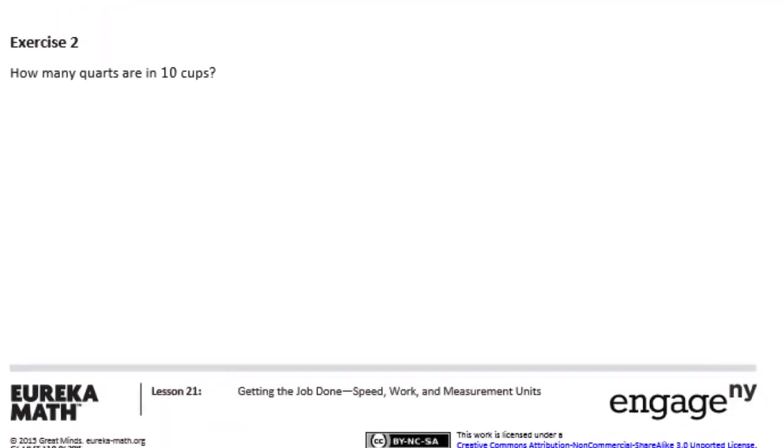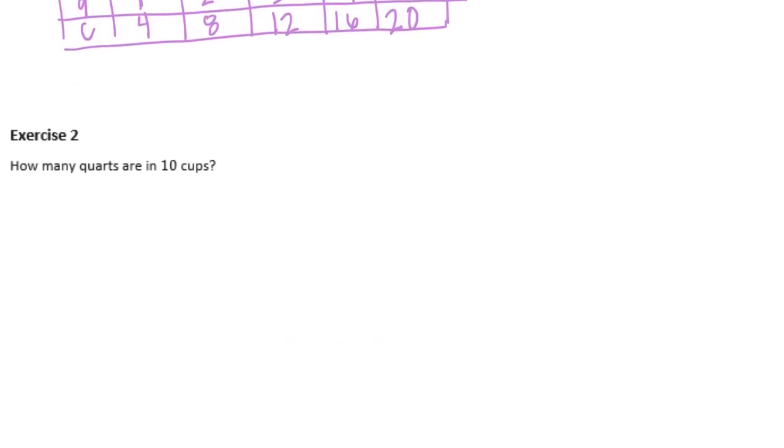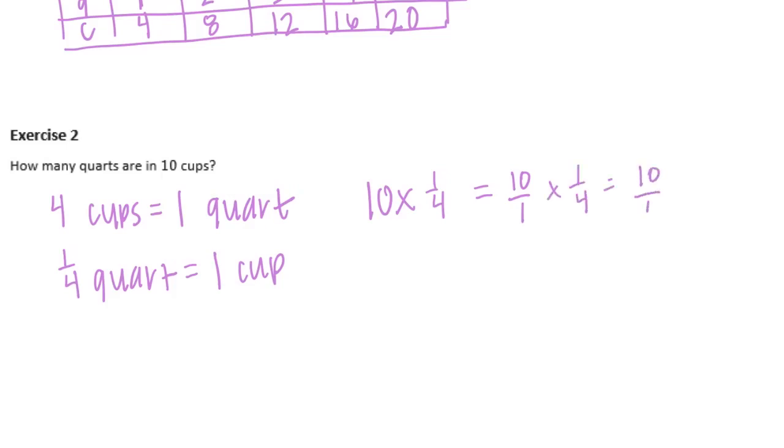How many quarts are in 10 cups? So now they've flipped it, and we want to know how many quarts are in cups. So we know that there are 4 cups in 1 quart. So that means that there's 1 fourth a quart in 1 cup. So we need to do 10 times 1 fourth, or 10 over 1 times 1 fourth is equal to 10 fourths. And if we make that into a mixed number, 4 goes into 10 twice. That's 8, so we'd have 2 fourths left over, or 2 and a half quarts. And we don't need to make a chart for that one.